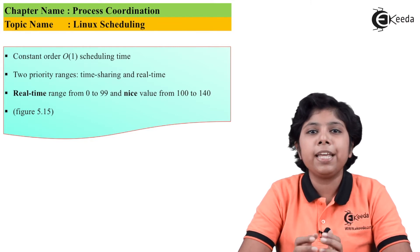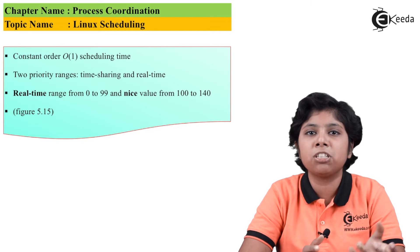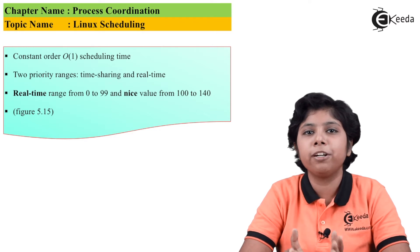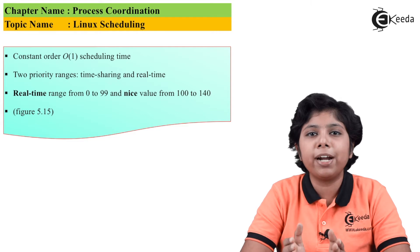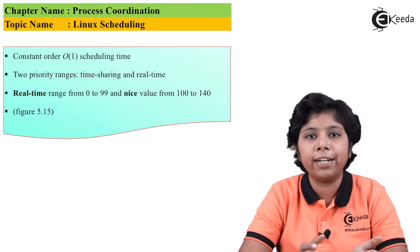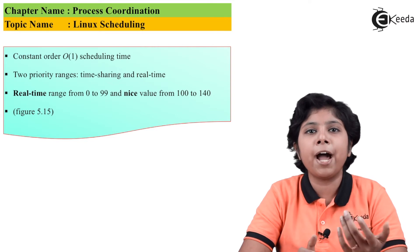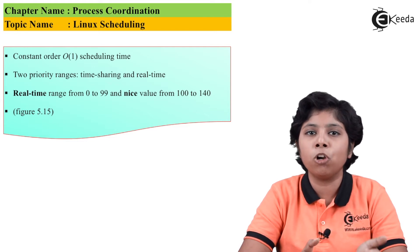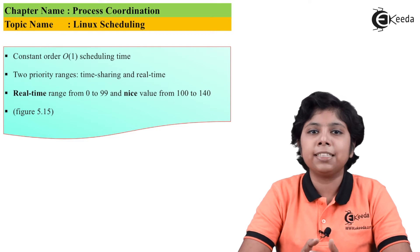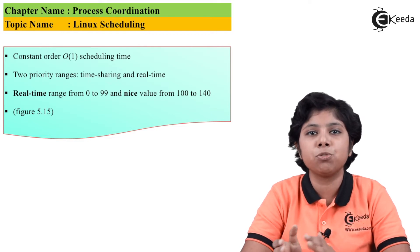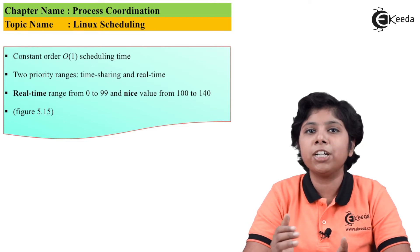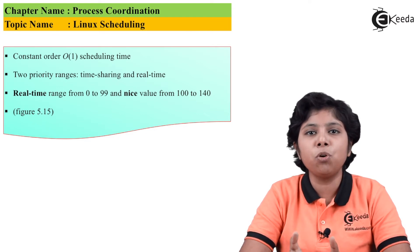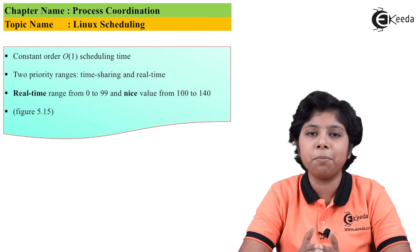For a normal priority process — where the nice value is 0 — if a process has 200 milliseconds of CPU proportion time, its virtual run time is also considered to be 200 milliseconds, because the virtual run time equals the actual physical run time for a normal priority process. However, if a higher priority process has the same 200 millisecond physical run time, then its virtual run time will be less than 200 milliseconds. In this way, priorities are reflected through the relationship between physical and virtual run time.